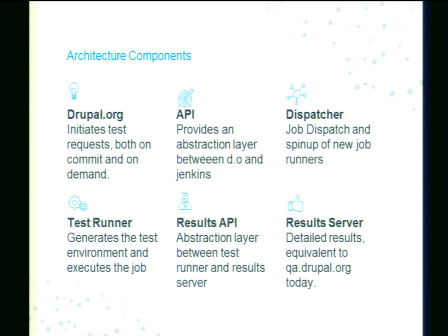Then we've got the test runner that generates the test environment and executes the job — that's the brains of the actual testing operation. I'll do a deep dive into that a little later. And then we've got a results API — an abstraction layer between the test runner and the results server. The reason we've done this is to be able to have the drupal.org results server, but also allow your own private results server, or a public results server separate from drupal.org that works kind of like a paste bin environment — and I'll get into that in a second.